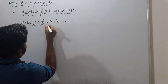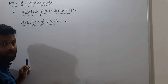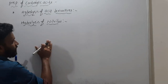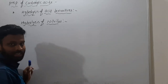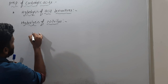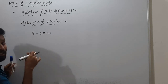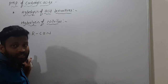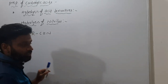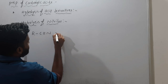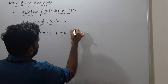Nitriles means cyanides, HCN like that. If you add HCN to a particular component, HCN on hydrolysis is always converted to carboxylic acids. So cyanide on hydrolysis is further converted to carboxylic acids.